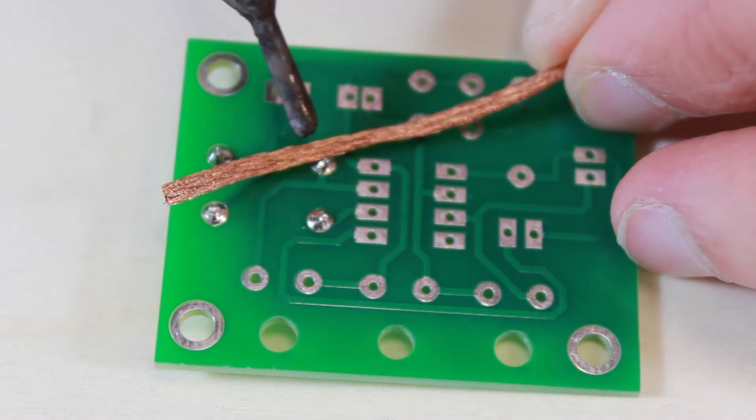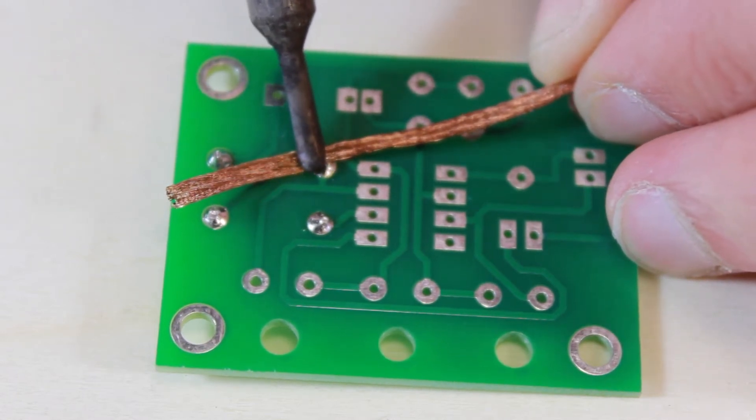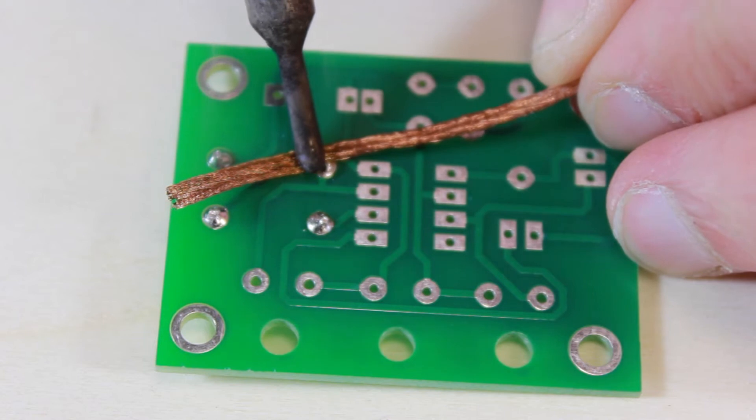We first place it across the joint, and then apply heat across the top of the solder wick, down onto the solder joint.